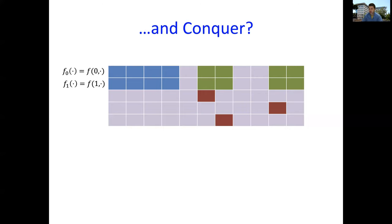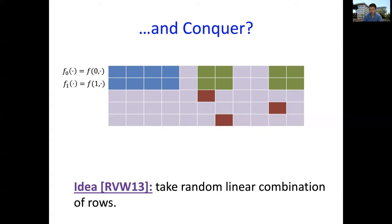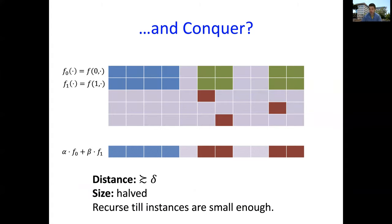Notice that each box that contained a false claim before, the prover has to lie somewhere in the green boxes above in order to be consistent with the lie that it's trying to maintain. The question is, that's how we divide, how do we conquer? Following this approach of RVW, what the verifier is going to do is take a random linear combination of the rows. It chooses a random alpha and beta and thinks in its head about the row that you get by taking the linear combination of alpha times first row plus beta times the second row.